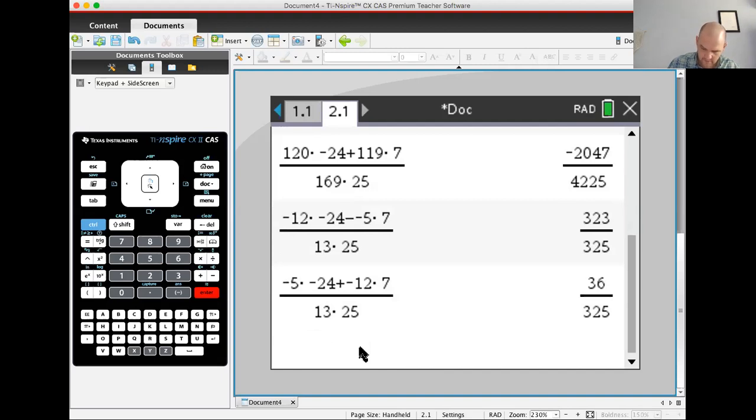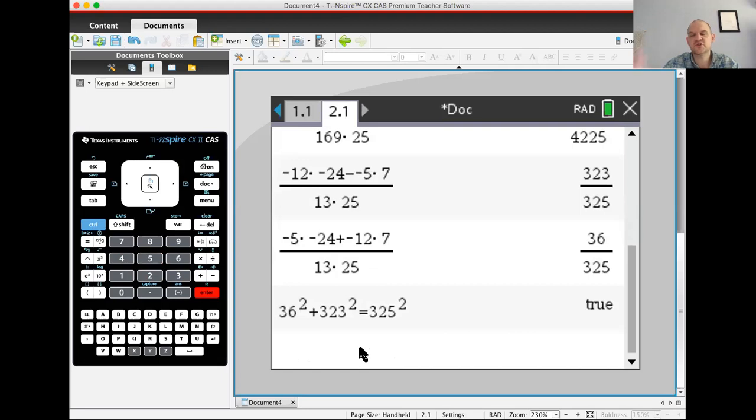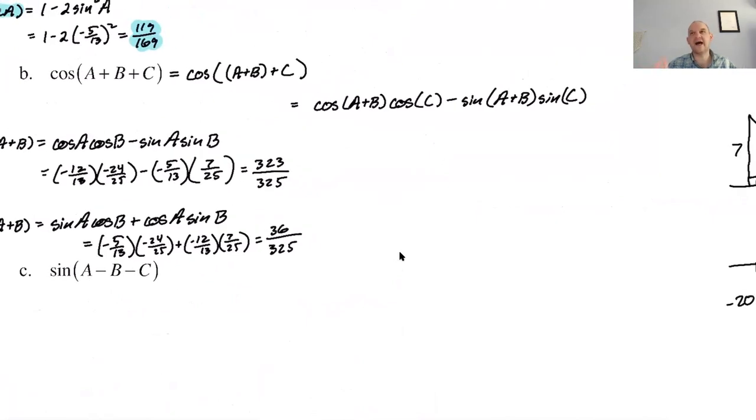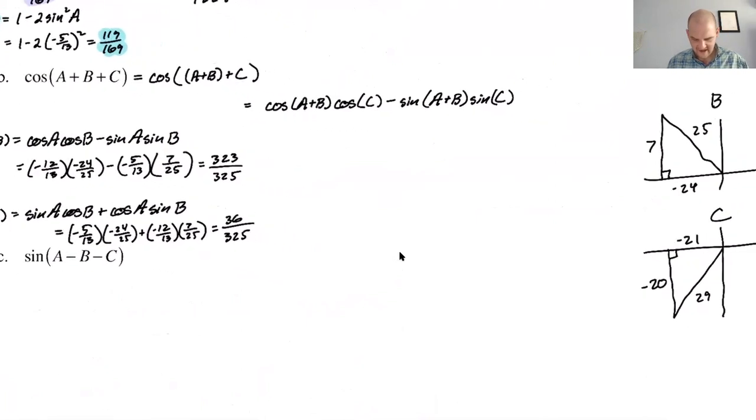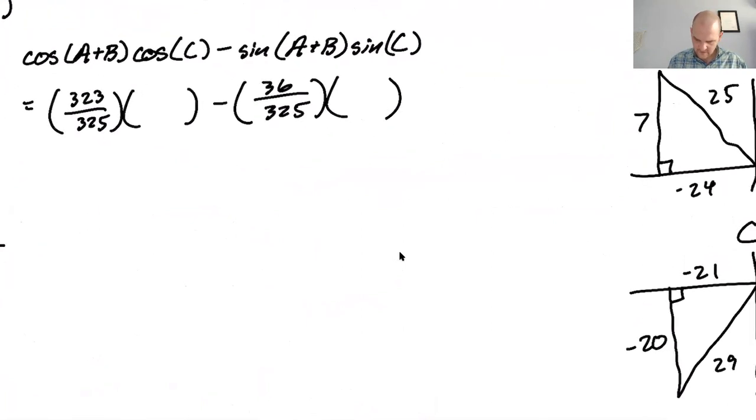So if we do 36 squared plus 323 squared, does that equal 325 squared? True. It does. It has to be because sine squared plus cosine squared has to equal one, but what? So we have a bunch of values. Let's go back and plug those in. So subbing in here, we're going to have, so this will be 323 over 325. And then I need to find the cosine of C minus 36 over 325. And then I'll need to find the sine of C.